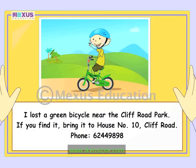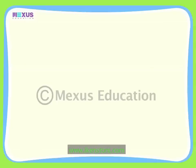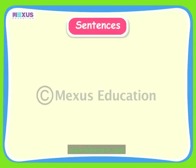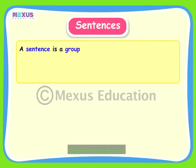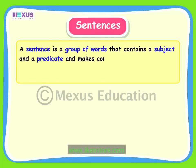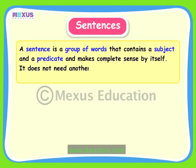Fleck has used many sentences in his poster, but he can use different kinds of sentences to make his writing better. Before we learn about the different kinds of sentences, let us define sentences. We can define a sentence as a group of words that contains a subject and a predicate and makes complete sense by itself. It doesn't need another word or group of words to do so.